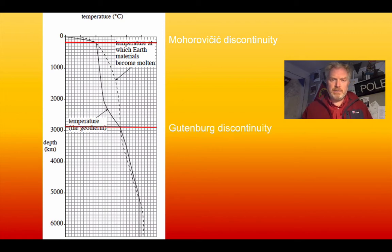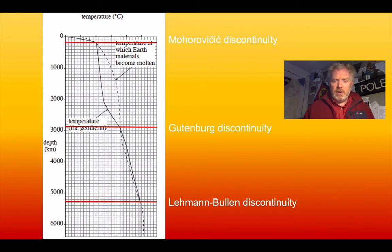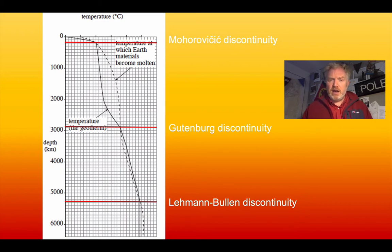We also see a change at about 2,900 kilometres down — the Gutenberg discontinuity — where the lines actually cross. And finally, nearly 5,300 kilometres below the surface, we see the Lehmann-Bullen discontinuity where the lines cross back again. The significance: if the melting temperature is higher than the geothermal gradient temperature, those materials must be solid. If the melting temperature is lower than the actual rock temperature, then the material will melt and we end up with a liquid.